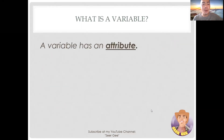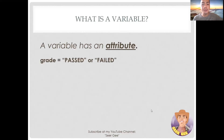Also, please note that a variable has an attribute. So, what is an attribute? An attribute is a specific value on a variable. For instance, the variable student grade has two attributes: passed and failed.